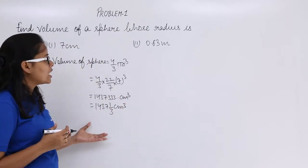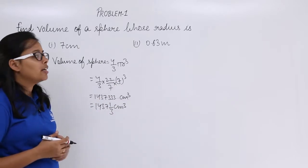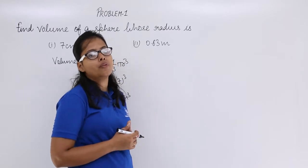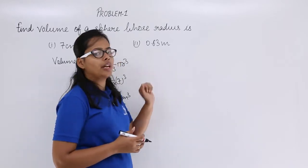Now let's do the same thing for the second part. As the radius here is 0.63 meter, use the same formula and find out the volume of the sphere for this radius.